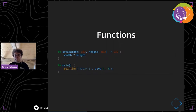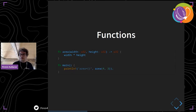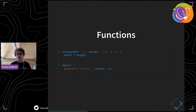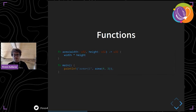Next, functions. Here is a function 'area' with two parameters of type u32 — unsigned integer — and the return type is also u32. One special thing to notice is that there is no return statement, because it is optional. The last expression is returned implicitly. The function call in the main function is as you would expect.